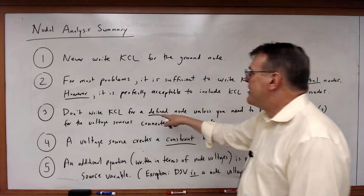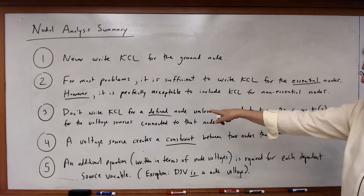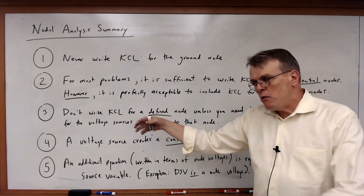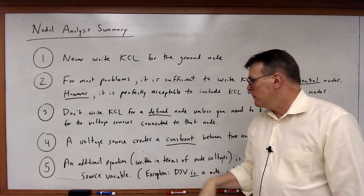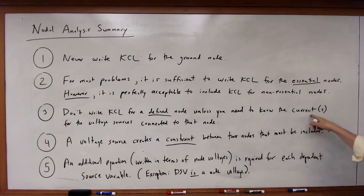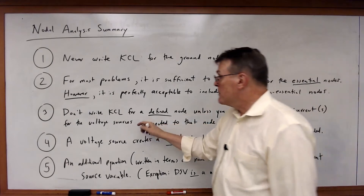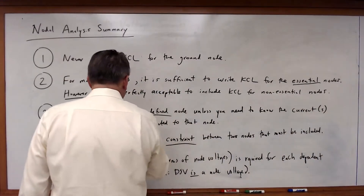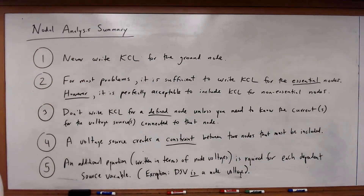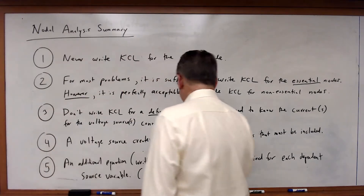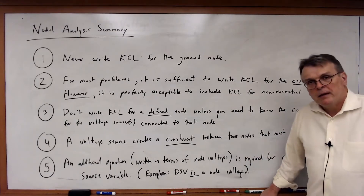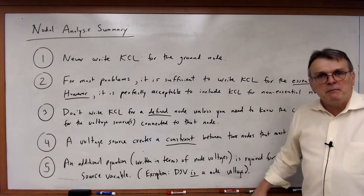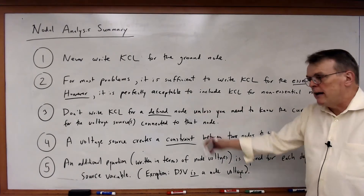Third, don't write KCL for a defined node — in other words, a node where a voltage source defines that voltage — unless you also need to know the currents for the voltage sources connected to that node. Number four, a voltage source creates a constraint between two nodes that must be included. Either you write it on the schematic or you write a constraint equation.